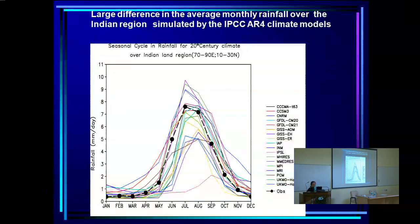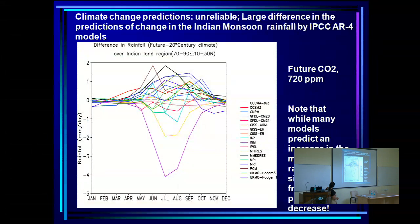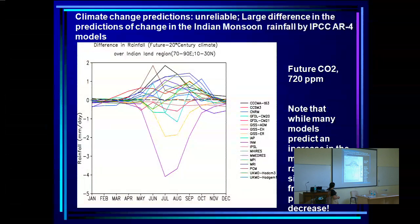Models all get some annual cycle but there is huge scatter. Looking at future projections — the difference between a future scenario at 720 ppm CO2 versus 20th-century climate — for June–September many models show an increase in monsoon rainfall, but several models show a decrease. While many models predict an increase in the main monsoon season rainfall, a significant fraction predict a decrease, meaning these predictions are not very reliable.